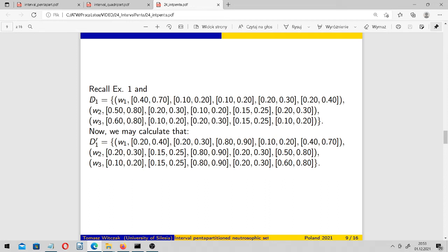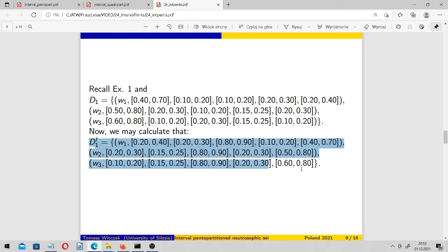So for example, if we have D1 from our initial example, then we may calculate that its complement is this set. I've calculated this and I hope that there is no any mistake.